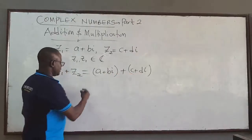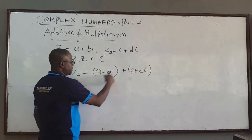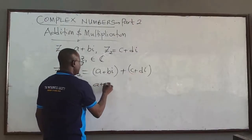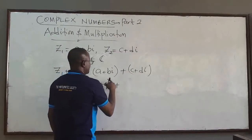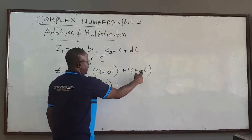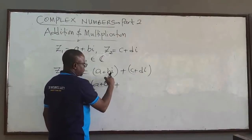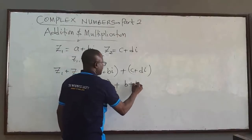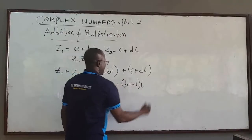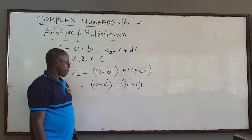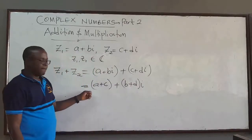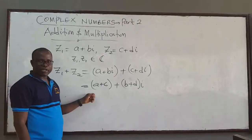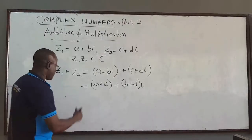Basically, that is it. So this gives you A plus C, and then factoring out the i, you get B plus D multiplied by i. So that is basically how you add two complex numbers.